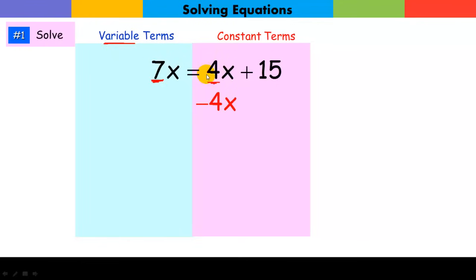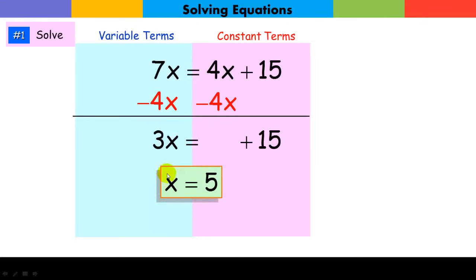To get the 4x off of this side, I subtract 4x, but if I do it from this side, I do it from this side. These are like terms, so we can subtract them. 7x minus 4x is 3x. This 15 just goes for a ride, and at this point we can solve for x. Divide both sides by 3 to make the coefficient 1 and isolate the variable. X equals 5.